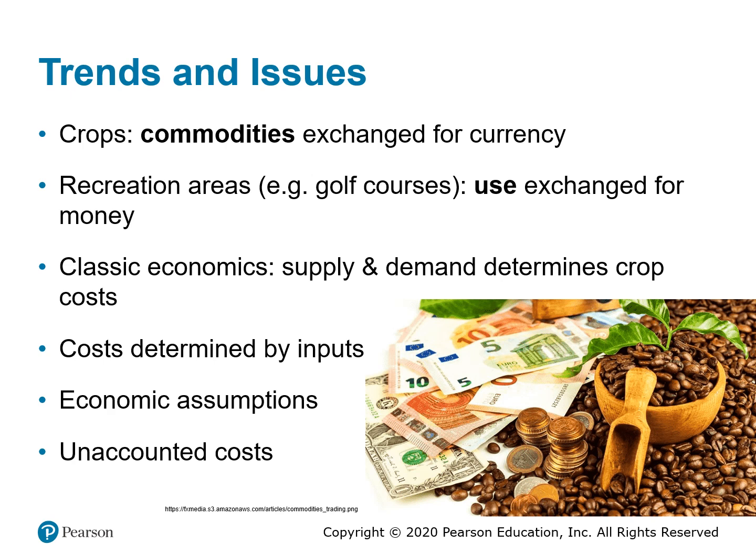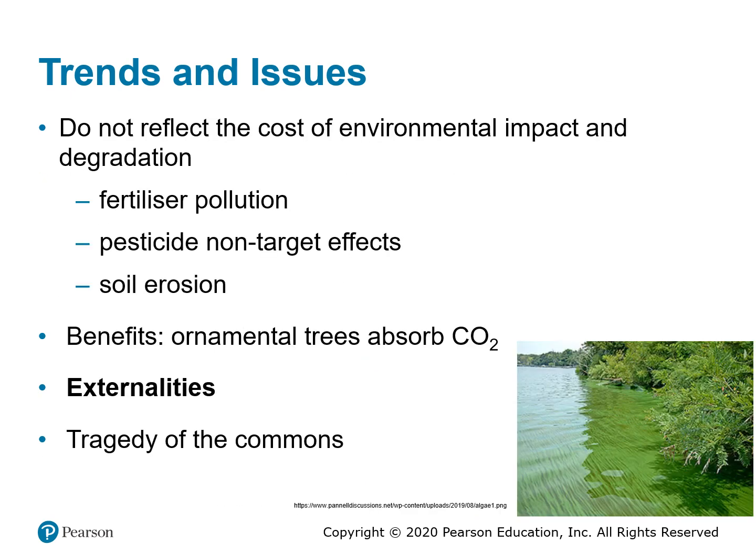The problem is that there are unaccounted costs, such as the cost of soil erosion to farming communities — for example, what happened in the United States in the 1930s — or the costs of tobacco on human health, or the cost of land clearing in tropical forest areas with respect to increases in atmospheric carbon. Traditional costs of crops usually did not reflect the cost of environmental impact and degradation, such as the effects of excessive fertilizer application on waterways, pesticides landing on non-targets, or soil loss through erosion. Nor do traditional costs take into account benefits such as ornamental trees in urban areas absorbing carbon dioxide.